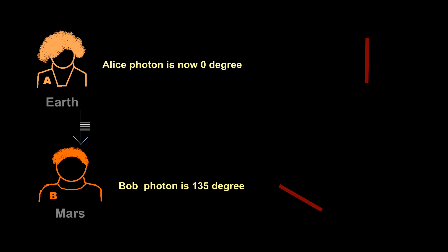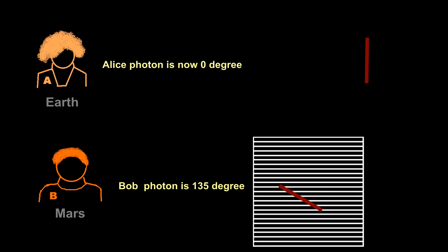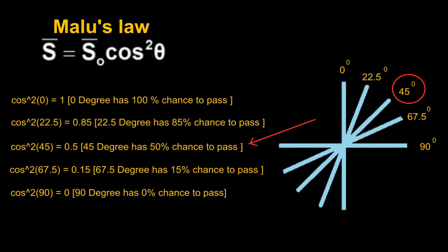Alice sent message to Bob to use horizontal filter, and Bob is trying the same. He tries 90 degree filter with 135 degree photon. Will his photon pass for sure? No. It may or may not pass. Because the angle between photon and filter is 45 degree. It will pass 50% of the time and will block another 50% of the time.